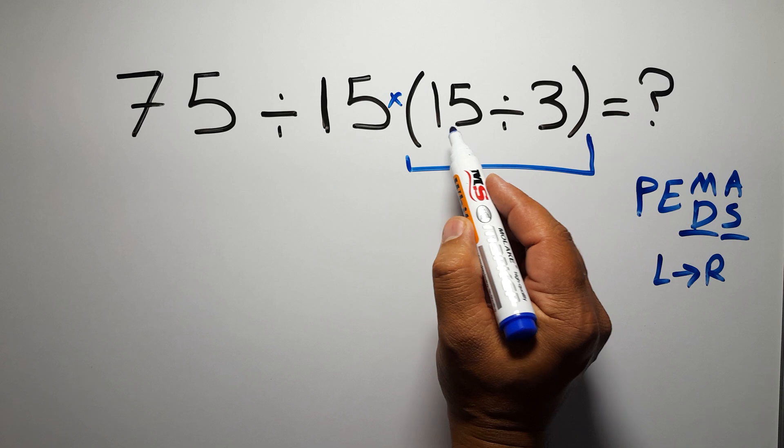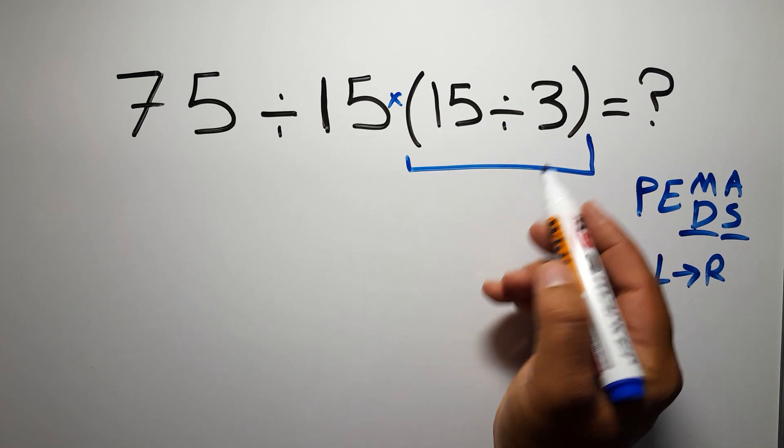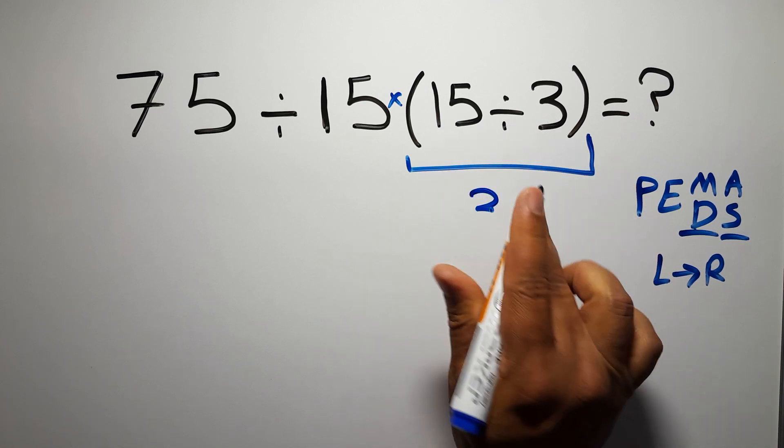Inside these parentheses we have 15 divided by 3, which equals 5.